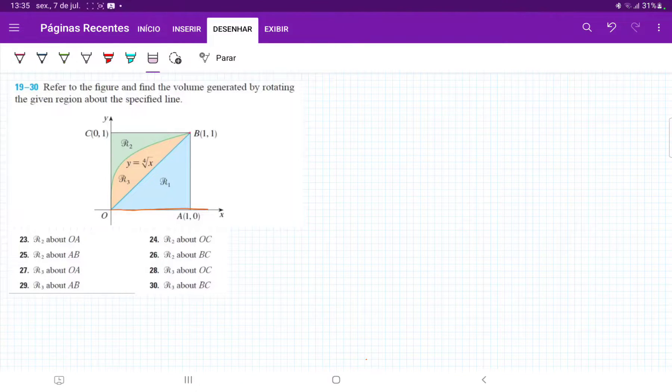So for 23, we're taking R2 and then revolving it about the line OA. So R2 is the section in green, right?